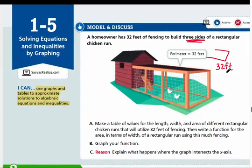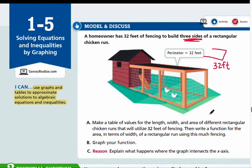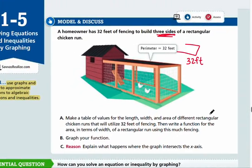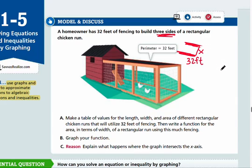Let's look at our questions. We're going to make a table of values for the length, width, and area of different rectangular chicken runs that will utilize 32 feet of fencing. We know that the two lengths are going to be the same, and the width is going to be just one side. So we can use x for the width, since we don't know it. We know that two lengths plus x will equal 32.